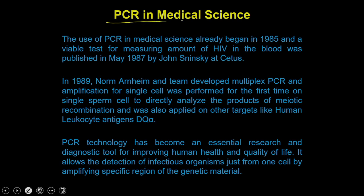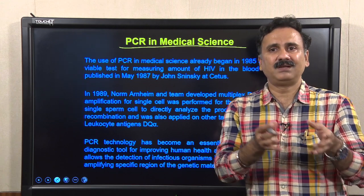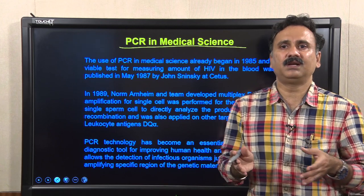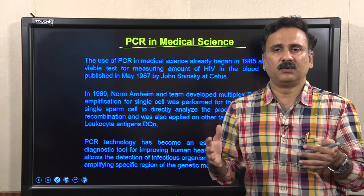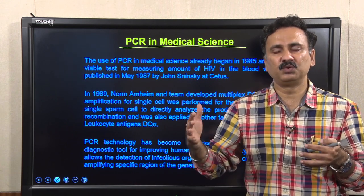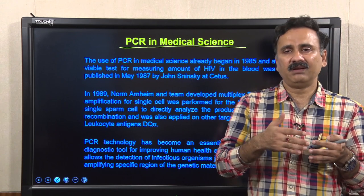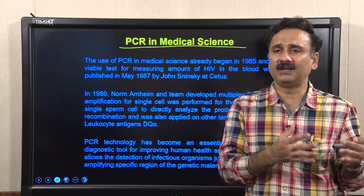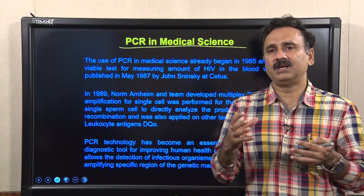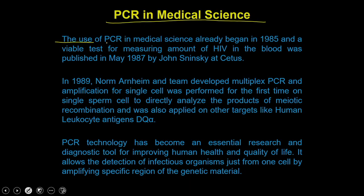PCR is used very extensively in medical science. The use of PCR in medical science was already started in 1985. In the early 1980s, people were trying to amplify crucial genes responsible for sickle cell anemia and other diseases, which was a very difficult task. This motivated the development of PCR technology. A viable test for measuring the amount of HIV in blood was published in May 1987.